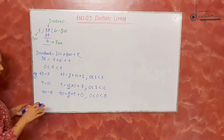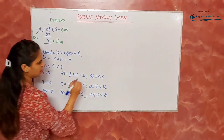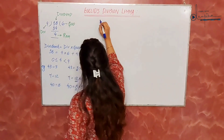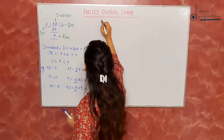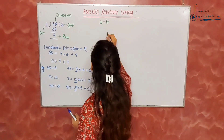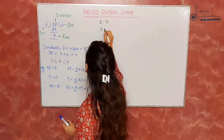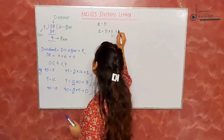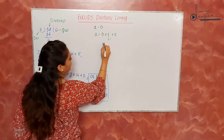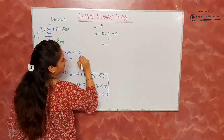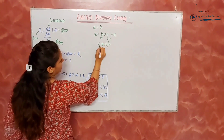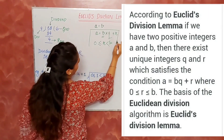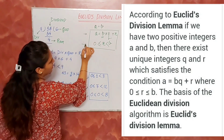In all cases we see that this condition is unique. In general, for a divided by b: a equals b multiplied by quotient plus remainder, where the remainder is less than the divisor but greater than or equal to 0. This is actually the case of Euclid's division lemma, and there are two conditions.